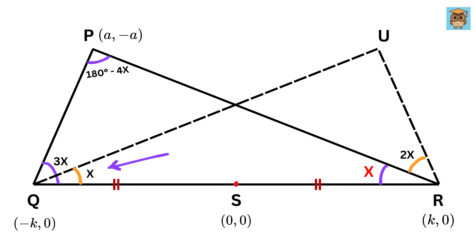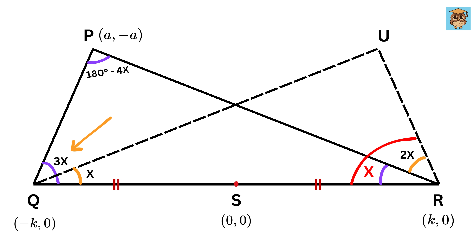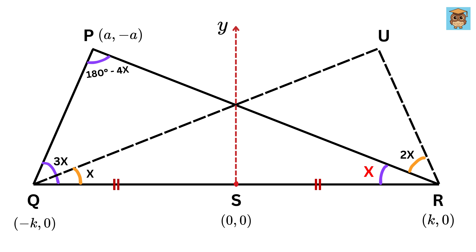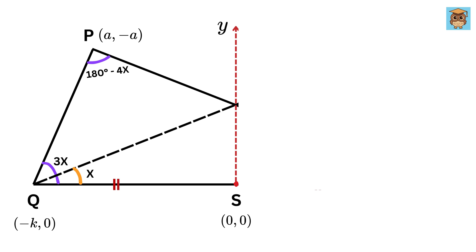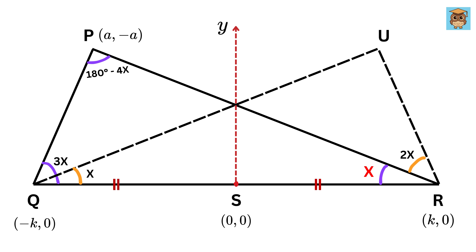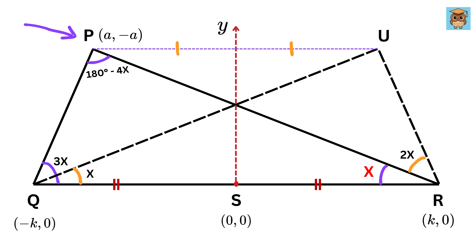Can you see something? Angle UQR is X and angle PRQ is also X. Then angle PQR is 3X and angle URQ is also equal to 3X. If we draw the Y-axis, then QS is also equal to RS. Hence, all points on the left side of the Y-axis are just the mirror image, or reflection, of the right side. That means point U is just the reflection of point P across the Y-axis. So if point P is (A, minus A), then the coordinate of point U will be (minus A, minus A).